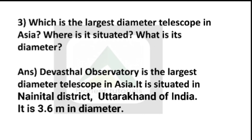Question number 3: Which is the largest diameter telescope in Asia? Where is it situated? What is its diameter? The largest diameter telescope in Asia is in India — that is the Devastal Observatory. It is situated in the Nainital district of Uttarakhand, India. It is 3.6 meters in diameter.